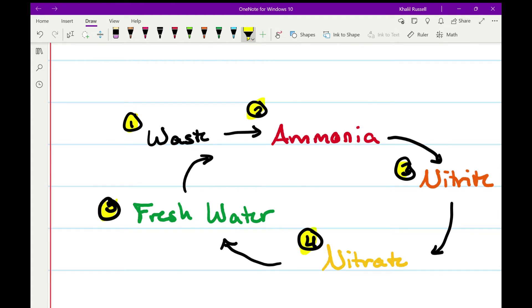Step four, that nitrite becomes nitrate. Step five, that nitrate becomes fresh water, either because you did a water change and you remove those nitrates and replaced it with nitrate-free water, or because the aquarium plants took up those nitrates and didn't put them back into the aquarium, hence producing fresher water.